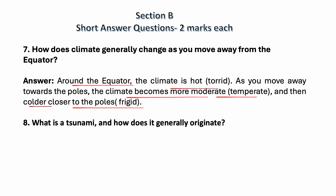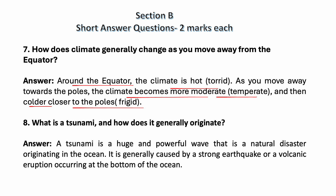What is a tsunami and how does it generally originate? A tsunami is a huge and powerful wave — a natural disaster originating in the ocean. It is generally caused by a strong earthquake or a volcanic eruption occurring at the bottom of the ocean.